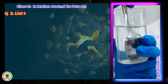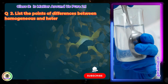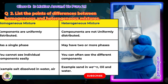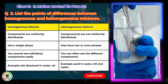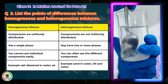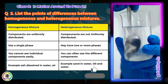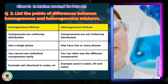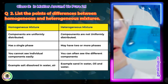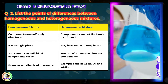Question 2: List the points of differences between homogeneous and heterogeneous mixtures. Homogeneous mixture: Components are uniformly distributed, exist as a single phase, and you cannot see individual components easily. e.g. salt dissolved in water, air.